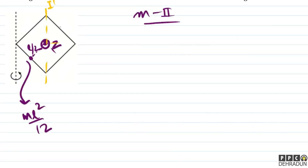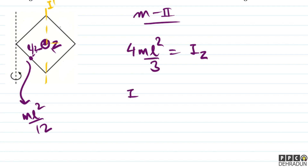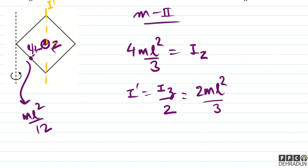Similarly हर rod का center point के about moment of inertia ML²/3 आएगा। Total Iz = 4ML²/3। तो I' = Iz/2 = 2ML²/3।